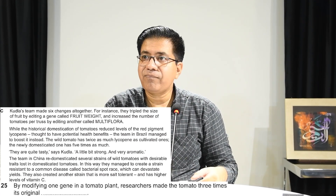The passage says 'fruit weight,' but three times its original fruit weight doesn't make a logical answer here. Think about it — 'three times its original' refers to the triple size of the fruit by editing a gene. The actual tomatoes were small; they changed the gene and studied the result. So the answer is 'size.'